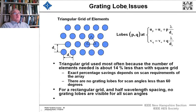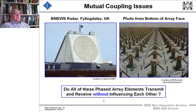For grating lobes with triangular spacing, you have the same formula. And the triangular grid uses 14%, I was a little high on the saving. They need about 14% less than with a square grid. The exact percentage of savings depends on the scan requirements of the array. And there are no grating lobes for scan angles less than 60 degrees. And for a rectangular grid, a half wavelength spacing, no grating lobes are visible for all scan angles.